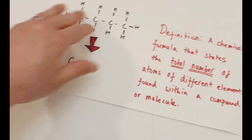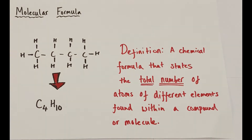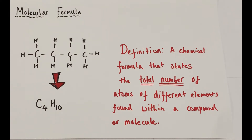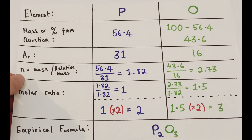Now let's look at what a molecular formula is. A molecular formula is the actual number of atoms of different elements that make up a molecular compound. Using butane as an example — its displayed formula shows all bonds — there are 4 carbons and 10 hydrogens, giving C4H10. So a molecular formula states the total number of atoms of different elements within a particular molecule or compound.